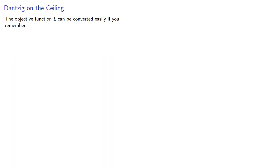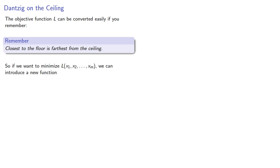The objective function L can be easily converted if you remember that closest to the floor is farthest from the ceiling. So if we want to minimize some objective function, we can introduce a new function which is the negative of our original function, and then we can apply the simplex algorithm to maximize our new function.